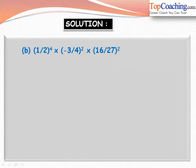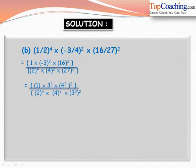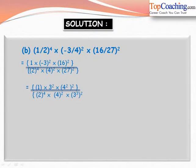For part b: 1 by 2 to the power of 4, into minus 3 by 4 to the power of 2, into 16 by 27 squared. This can be written as 1 into minus 3 squared into 16 squared, divided by 2 to the power of 4 into 4 squared into 27 squared. Further, this equals 1 into 3 squared into 4 squared whole squared, divided by 2 to the power of 4 into 4 squared into 3 cubed whole squared. From 4 squared to the power of 2 and 4 squared, we get 4 squared equals 16, and from 3 cubed whole squared we get 3 to the power of 4.